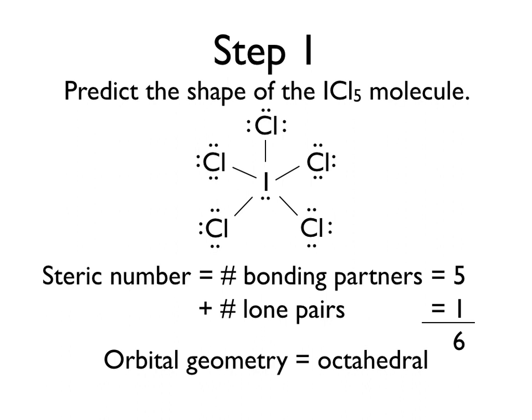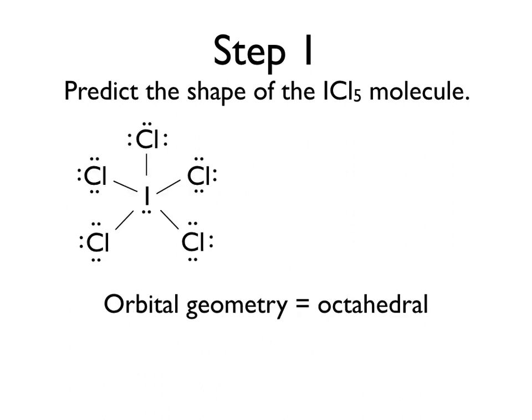Steric number can be used to predict what our orbital geometry will be, or where the positions of electrons are relative to the central atom. For a steric number of six, our orbital geometry is octahedral. However, this problem asks us to predict the shape of the molecule, and when we talk about shape, we're talking about the molecular geometry, which considers only the placement of atoms relative to the central atom. So orbital geometry can help us, but it's not the final answer. Now that we know our orbital geometry, we can take our Lewis dot structure and turn it into more of a 3D picture.